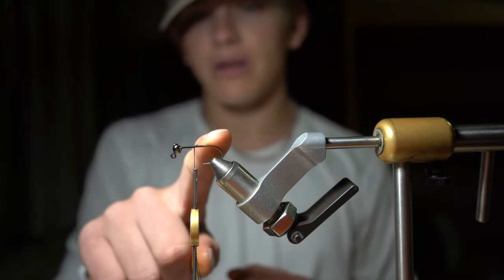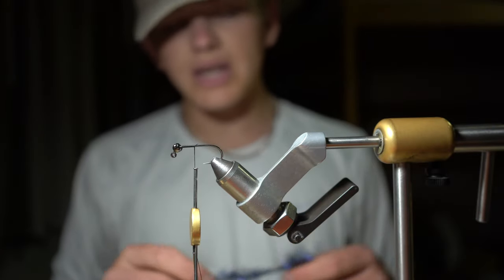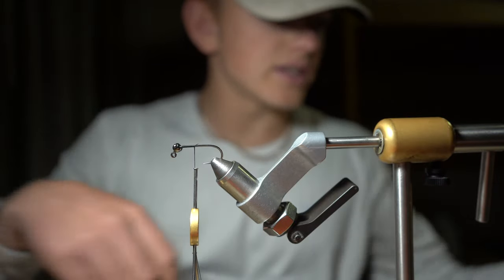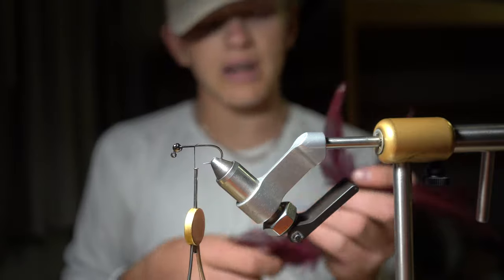You'll need a size 8 jig hook at 45 degrees with a tungsten bead. For materials, you're going to need UV puller chenille, wine schloppen or marabou or saddle hackle - any of those work.